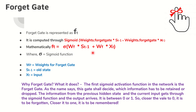The forget gate is represented as FT and it can be computed through the sigmoid function. Each gate has its own corresponding weights — the forget gate has weight WF, the input gate has WI, and the output gate has WO. So FT is equal to sigmoid of WF multiplied by ST minus 1 (the previous hidden state) plus WF multiplied by XT (the current input). Using this we can compute FT, which is the forget gate.